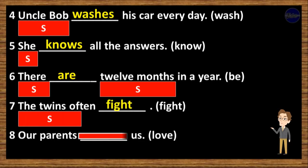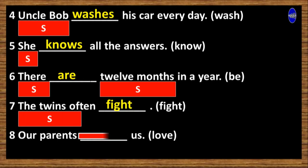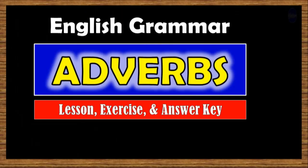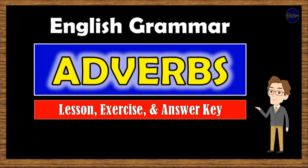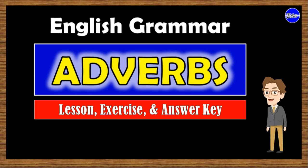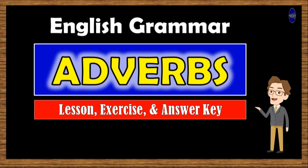8. Our parents ___ us. (Love) That is our discussion of subject and verb agreement. Our next topic of discussion is adverbs. By the way, don't forget to support me by subscribing and liking this tutorial if you haven't. Thanks and ta-ta.